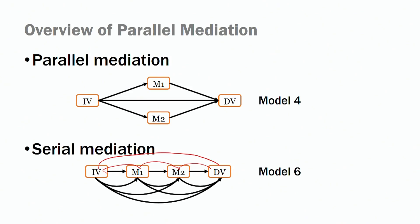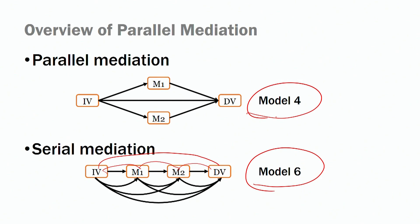You could have similar variables, so running the models is not a very complex or complicated thing to do. But you have to think through your model in your theory development to make the distinction between parallel and serial mediation models. An important distinction from an analytical standpoint is that you need to use Model 6 instead of Model 4 to test for serial mediation models. For simple mediation we use Model 4, but for serial mediation models we use Model 6 of the PROCESS macro developed by Hayes.